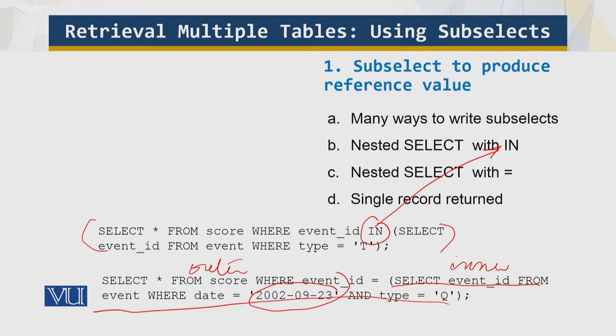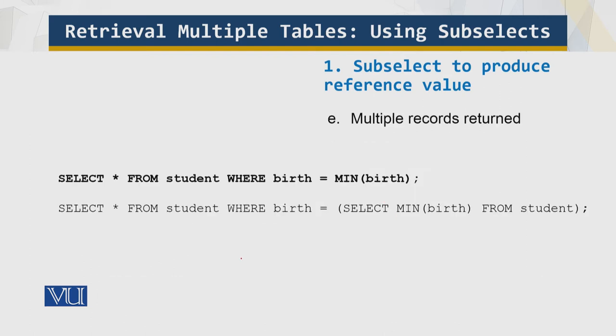Now let's look at one problem which you are going to face and you might be tempted to write a certain code. In this form of subselect where the inner query is preceded by a comparison operator, it's necessary that the inner query produce no more than a single value. Multiple records will create a problem.